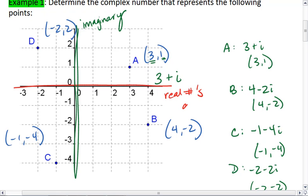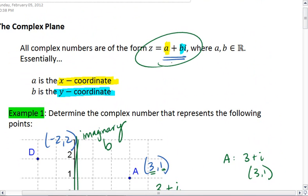So your real numbers is your a component. Your imaginary numbers is your b component of the form z equals a plus bi.